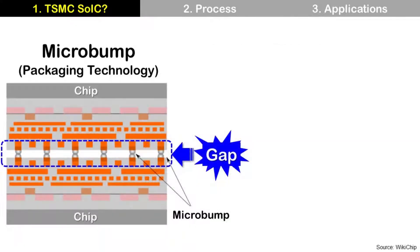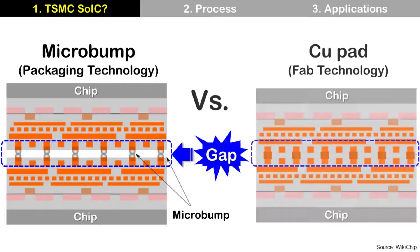but TSMC SOIC uses copper pads without micro-bumps. You can see micro-bumps between the top and bottom chip, and there is a gap created by these micro-bumps — that uses packaging technology. On the right, there is no micro-bump and no gap because it uses copper pads to connect the top and bottom chip.